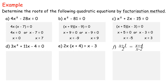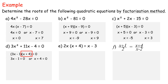In example d: 3x² plus 11x minus 4 equals 0. This is an example of factoring three terms with leading coefficient which is not 1. Thus, (3x minus 1)(x plus 4) equals 0. 3x minus 1 equals 0 or x plus 4 equals 0. x equals one-third or x equals negative 4. Therefore, the roots are one-third and negative 4.